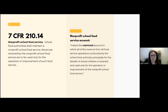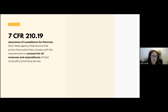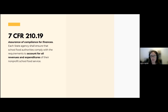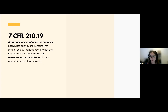Your financial management system needs to be able to facilitate this requirement. This is a state agency requirement — they must monitor their SFAs to make sure SFAs are complying with the requirement to account for all revenues and expenditures. This is where we get the DOE CNP income and expense reports, because it is a state agency requirement to make sure SFAs are reporting the financial results of the program and tracking revenues and expenditures separately.